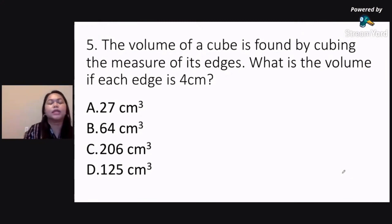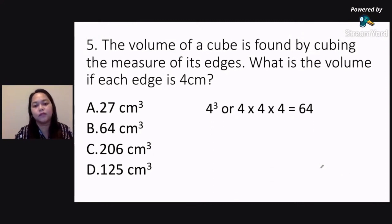volume is just length times width times height or edge cubed. So that's simply 4 times 4 times 4, or 4 cubed. And that gives us 64 centimeters. Number five is letter B. Many of you got the correct answer.